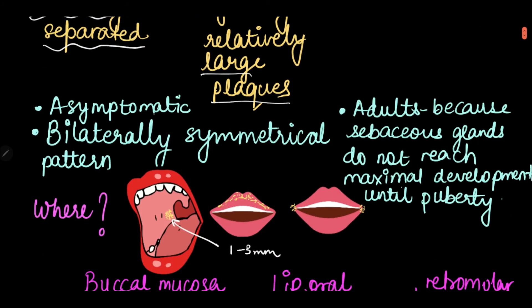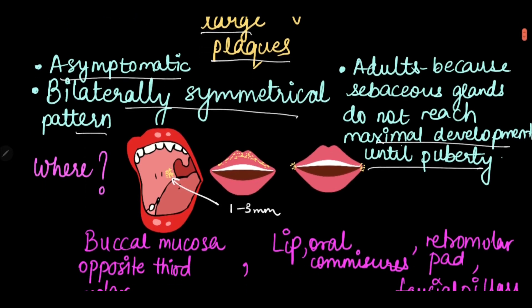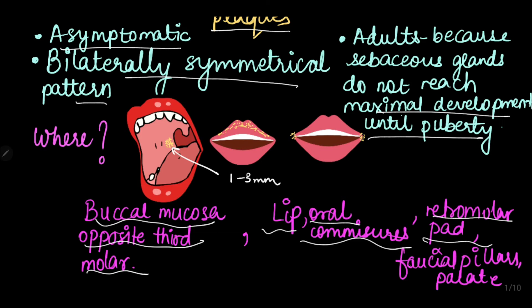These are usually asymptomatic in the oral cavity, they are bilaterally symmetrical, and they are mostly seen in adults because sebaceous glands do not reach maximum development until puberty. They are commonly present in the buccal mucosa opposite the third molar, and can also be present on the lip, the oral commissures, retromolar pads, facial pillars, and the palate.